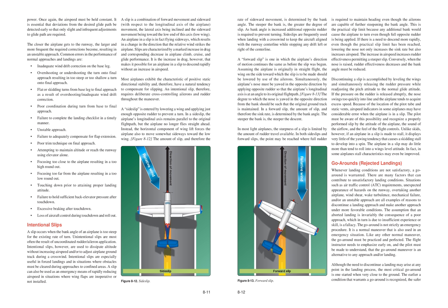Because of the location of the pitot tube and static vents, airspeed indicators in some airplanes may have considerable error when the airplane is in a slip. The pilot must be aware of this possibility and recognize a properly performed slip by the attitude of the airplane, the sound of the airflow, and the feel of the flight controls. Unlike skids, if an airplane in a slip is made to stall, it displays very little of the yawing tendency that causes a skidding stall to develop into a spin. The airplane in a slip may do little more than tend to roll into a wings-level attitude, and in some airplanes stall characteristics may even be improved.